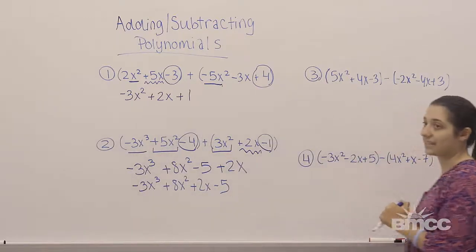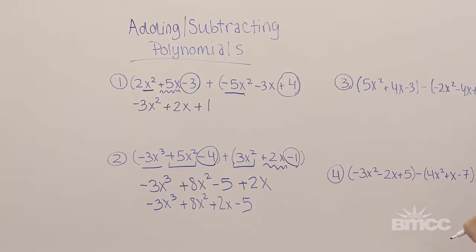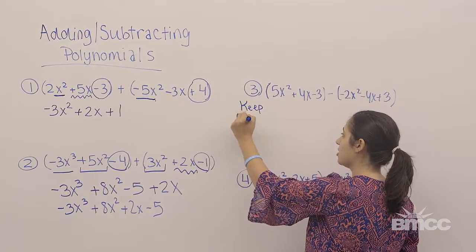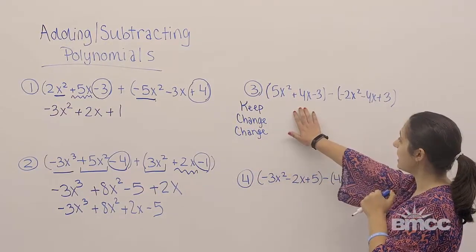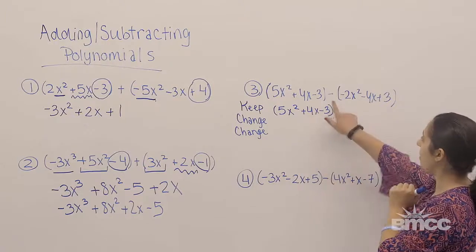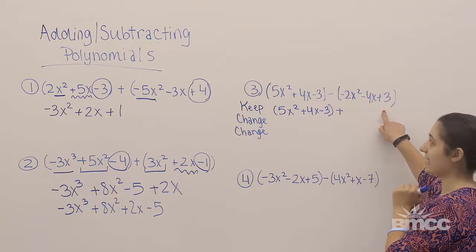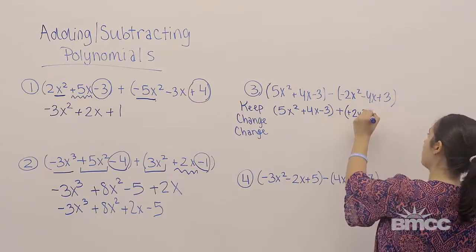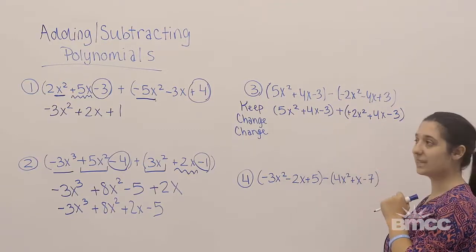Now let's talk about subtracting polynomials. Subtracting polynomials is a little bit different — notice we have a subtraction sign instead of an addition sign. We're going to use a process called keep change change. I keep the first polynomial and rewrite 5x squared plus 4x minus 3. Then I change the subtraction sign to addition and change each of the signs in the second polynomial: negative 2x squared becomes positive 2x squared, negative 4x becomes positive 4x, and positive 3 becomes negative 3. Now I add just like before.